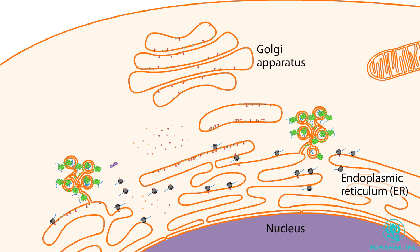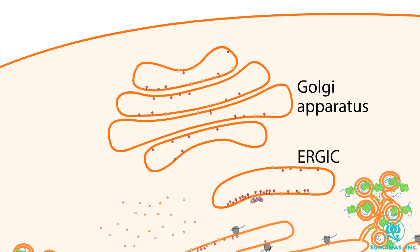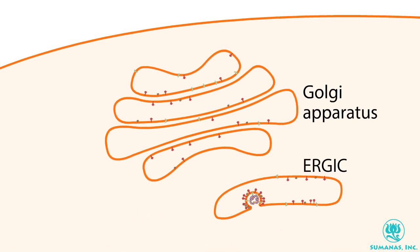Meanwhile, the structural proteins made on the endoplasmic reticulum transit through the internal membrane system of the cell, on their way toward the cell membrane. The first stop is the ER-Golgi intermediate compartment, or ERGIC. In this compartment, viral genomic RNA and membrane-embedded viral proteins come together to form viral particles.